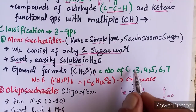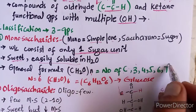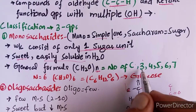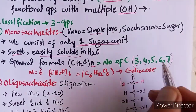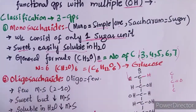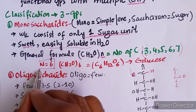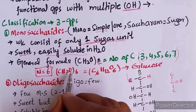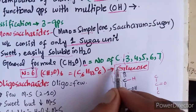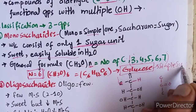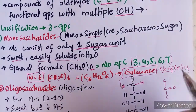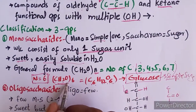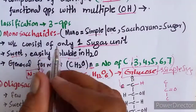In the formula (CH2O)n, N is the number of carbon atoms, which can range from 3 to 7. For example, if N equals 6, the formula becomes C6H12O6. The example of this is glucose. Glucose has the formula C6H12O6. Glucose has 6 carbons, is soluble in water, sweet in taste, and is a monosaccharide — a simple sugar.